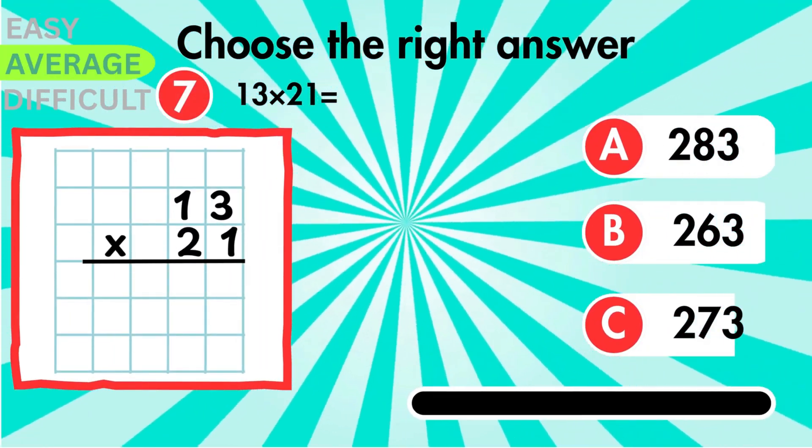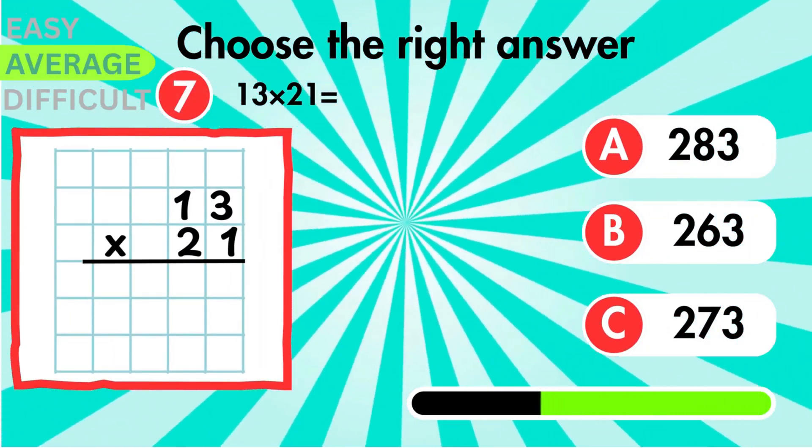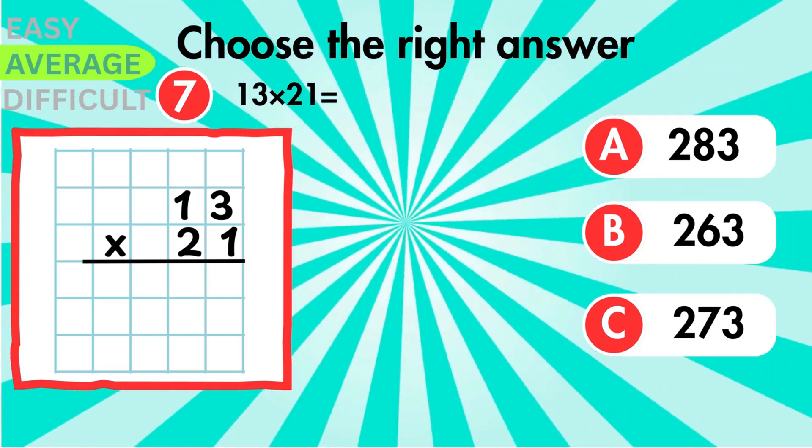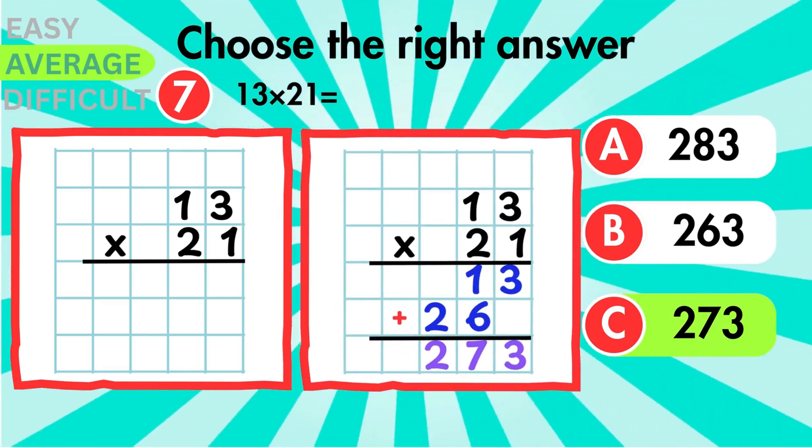Calculate 13 times 21. Look at the value of the numbers you are multiplying. The correct total is 273.